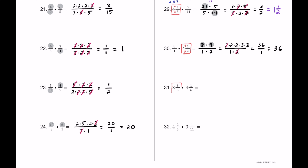For number 31, we have 3 and 3 fifths times 4 and 1 sixth. Converting: 3 times 5 plus 3 is 18 over 5, and 4 times 6 plus 1 is 25 over 6. The composites are 25, 18, and 6. 18 breaks into 2 times 3 times 3; 25 breaks into 5 times 5; and 6 breaks into 2 times 3. A 5 and 5 cancel, a 3 and 3 cancel, and a 2 and 2 cancel. On top we have 1, and on bottom nothing remains — so the answer is 15 wholes.